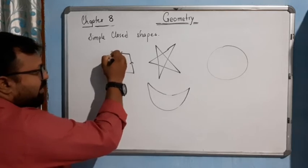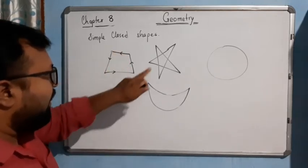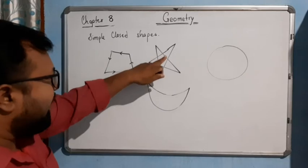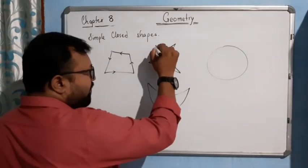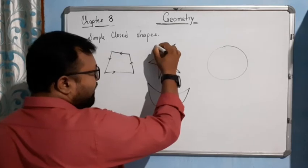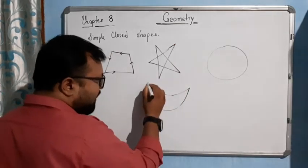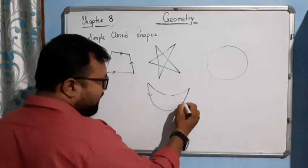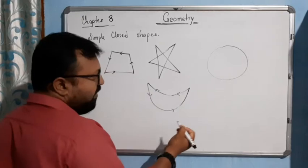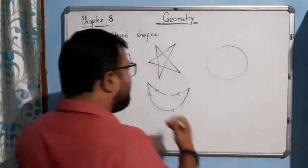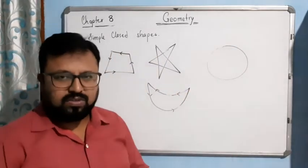We can say that the line ends at the beginning point. If you see, there is no open space — we started to draw the picture and it ends at the same point. In this circle also, if you start from here to draw the picture, see what happens — it ends here at the same point. So this type of figure is known as a closed figure.